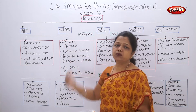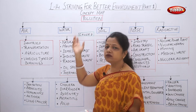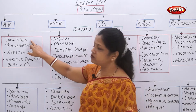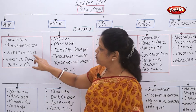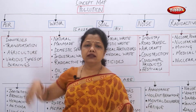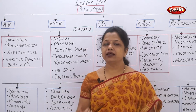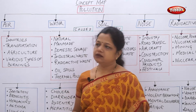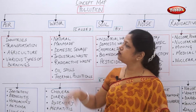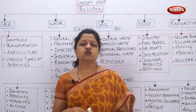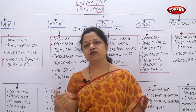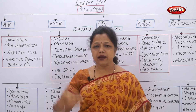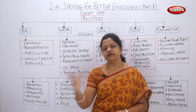Now, what can they be caused by? There must be something which is causing the air pollution and the water pollution. The things majorly causing air pollution are industries, transportation, agriculture, and various types of burnings. Industries produce waste material in gaseous form and are therefore responsible for air pollution. Transportation uses fossil fuels that don't burn completely, leaving unburnt carbon released through exhaust pipes, creating more than 50% of air pollution.